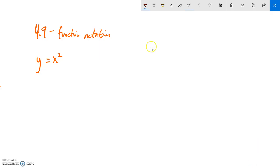This is section 4.9, and we are going to talk about function notation. This is just basically a way of writing something that you already know how to do. You already know how to do this, it's just the notation.